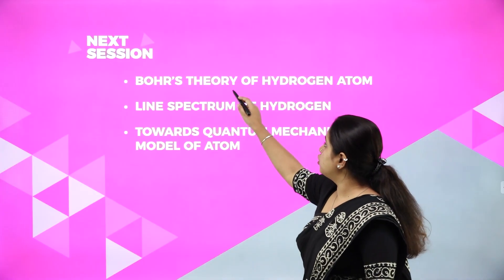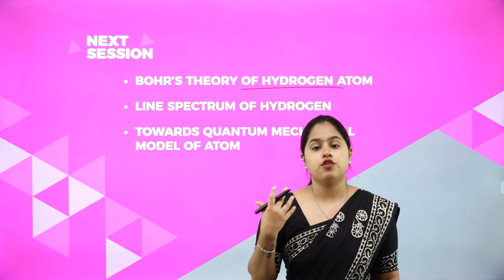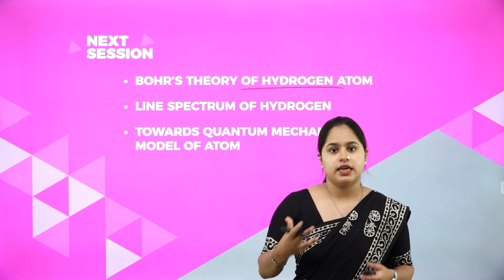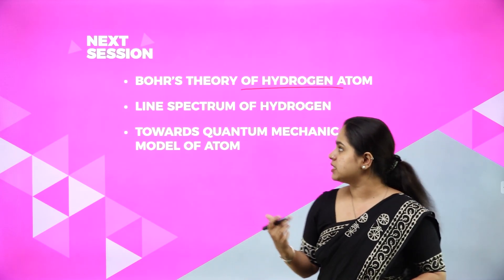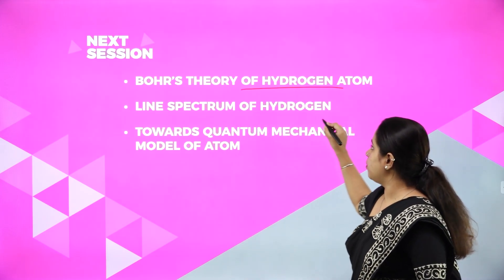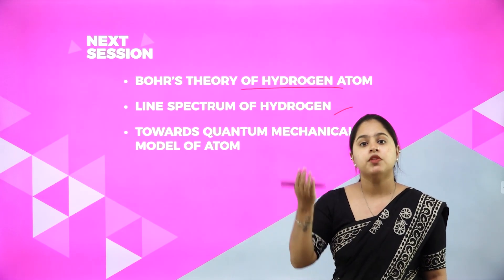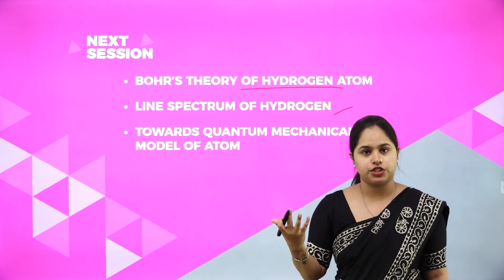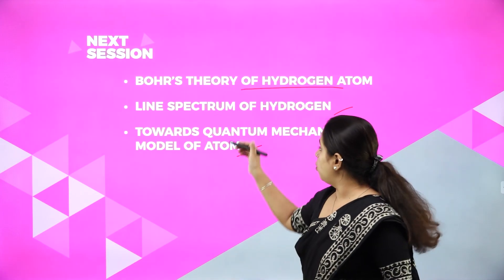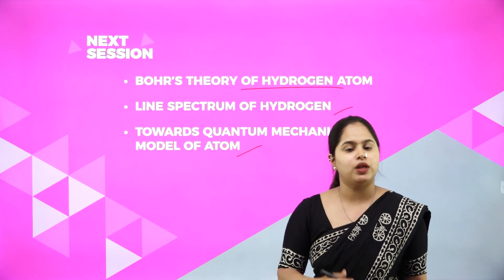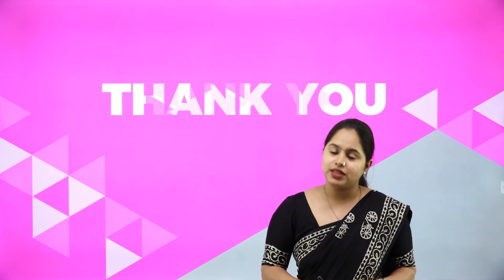In the next session, we will be studying about Bohr's theory of hydrogen atom in detail — various equations for finding out the energy, radius, etc. of different orbits, which are important for your examination. We will also study how using Bohr's theory for hydrogen atom we can explain the line spectrum of hydrogen, and the developments which led to the quantum mechanical model of atom. So that's all for today. Thank you.